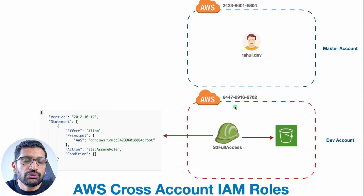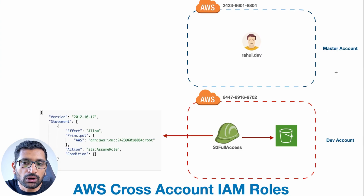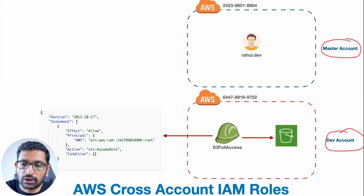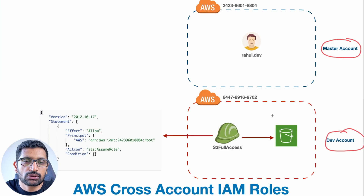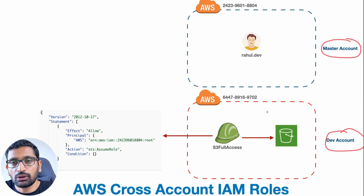First, let's understand the scenario we are going to cover in our demo. On the screen you can see two accounts — one is our master account and another is our dev account. When talking about AWS cross-account roles we work with multiple accounts, and here I'm just using these two accounts for this particular demo.